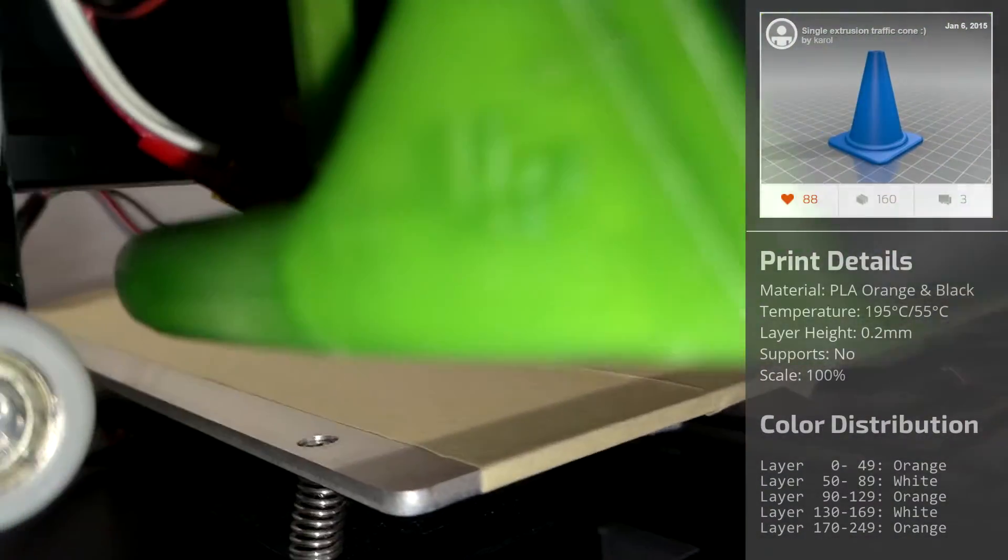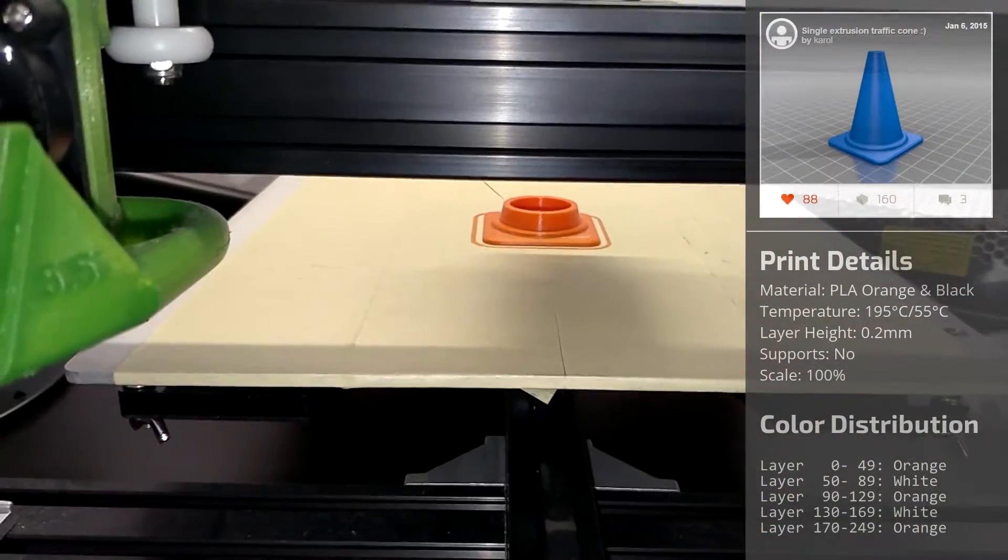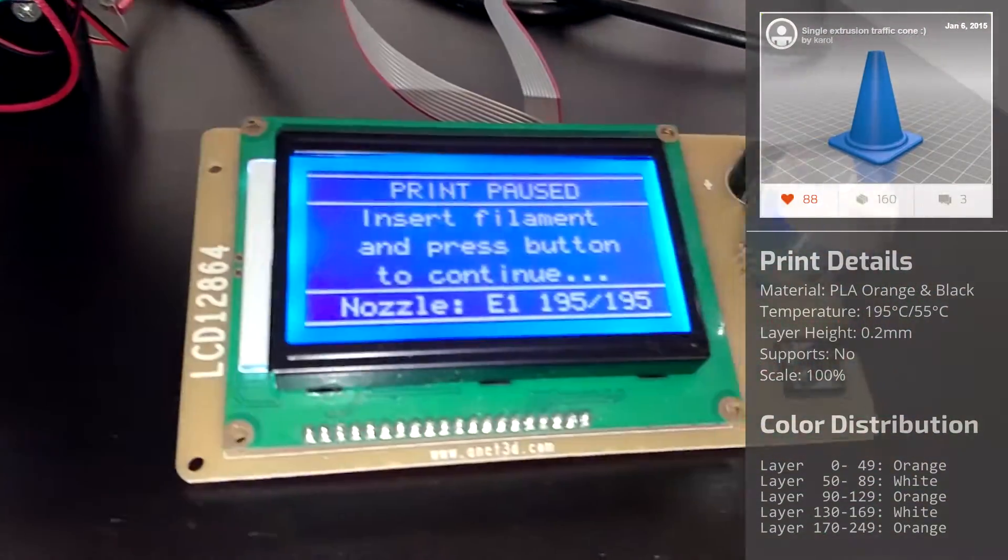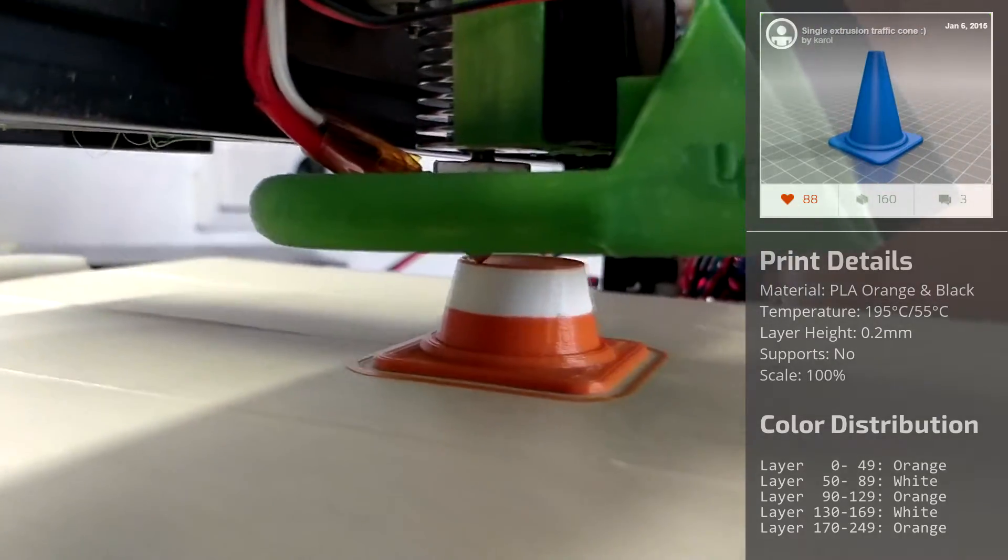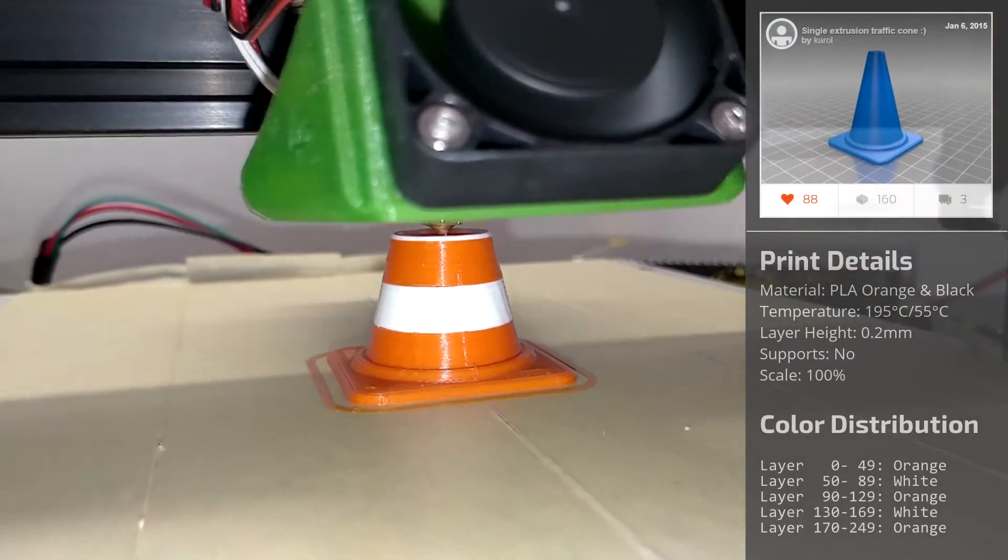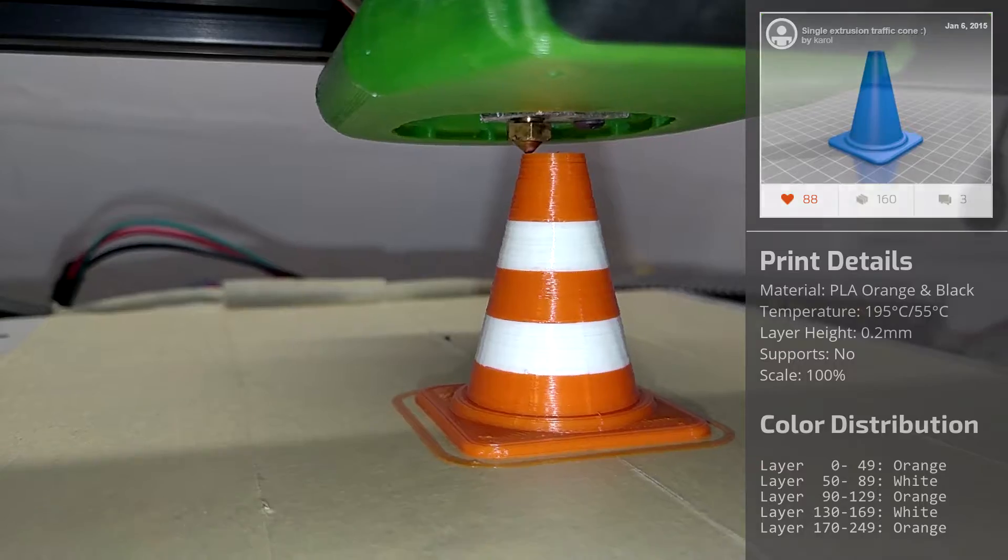After the print finishes layer 50, the nozzle moves to the front left corner and the printer starts beeping. I inserted the white PLA to print until layer 90, where I switch back to orange. White again at layer 130 up to 170, finishing the print with orange.